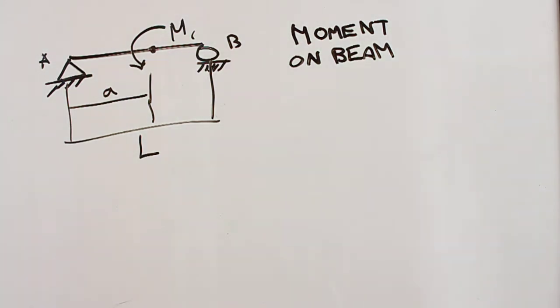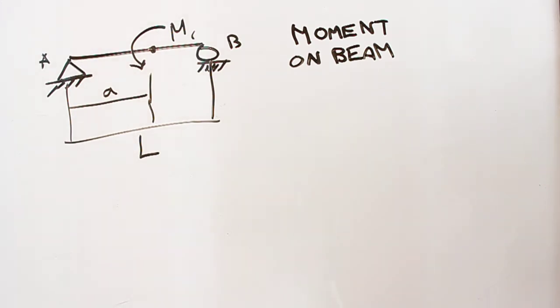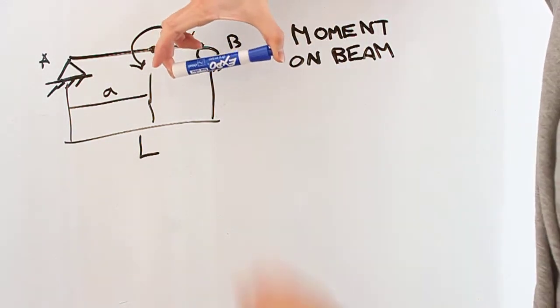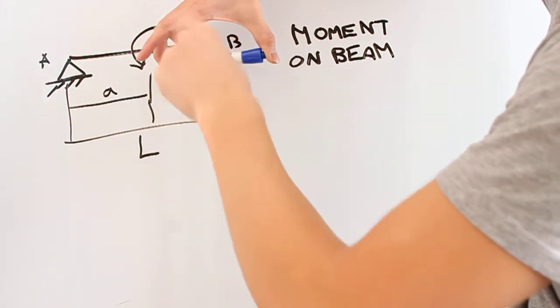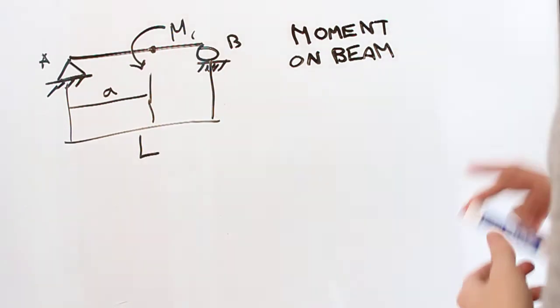This is similar to the problem before, except instead of a P1 downwards, you have an M1. So to understand this, just think of arbitrarily, if you're holding a beam with connections, something's tending to twist this. And it's at a given distance, A, from point A.